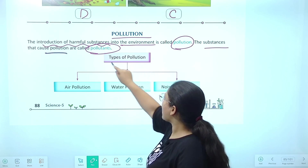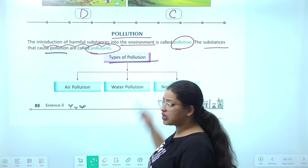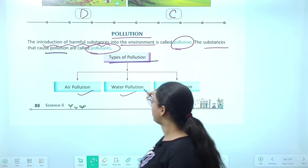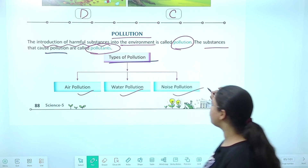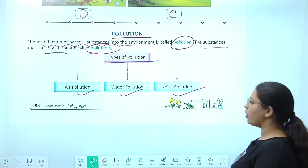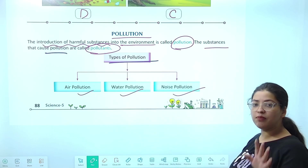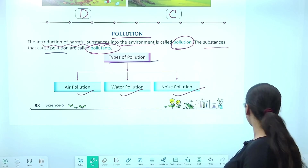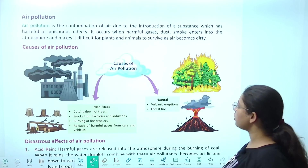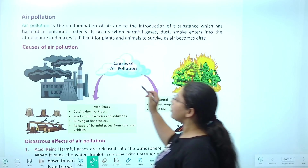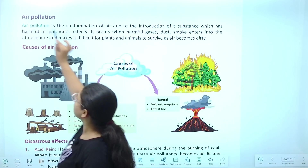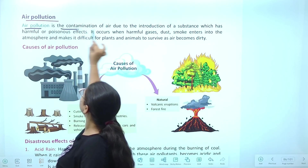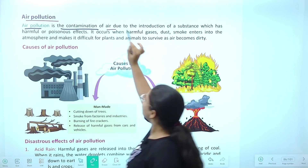Next — types of pollution. Kitne types ki pollution hoti hai? Major types are air pollution, water pollution, and noise pollution. Three major types of pollution. Ab air pollution ki baat karte hain — air pollution is the contamination of air.